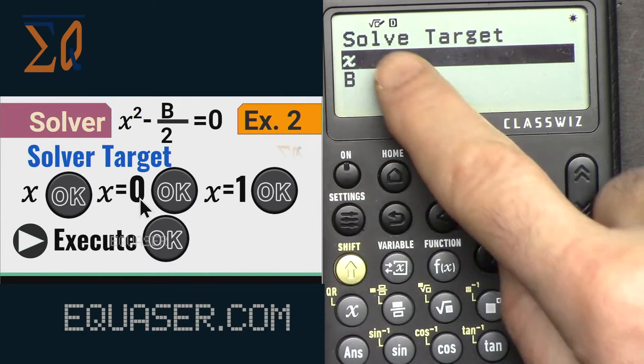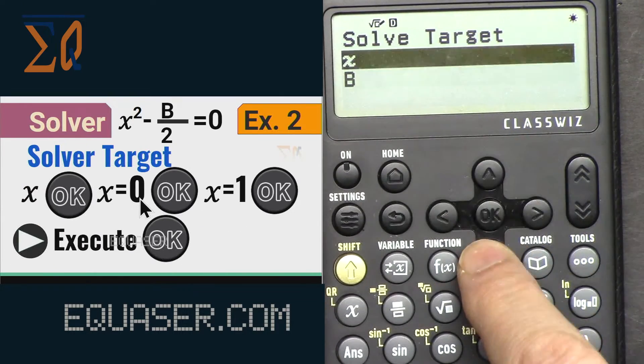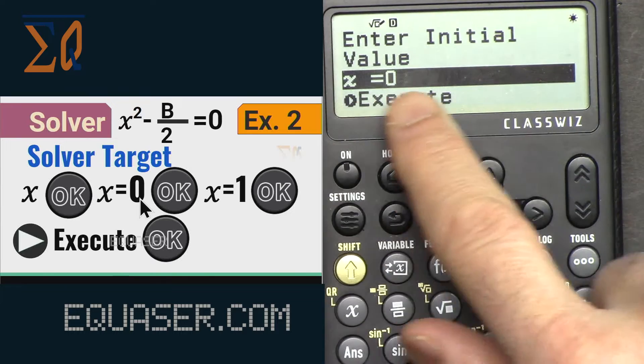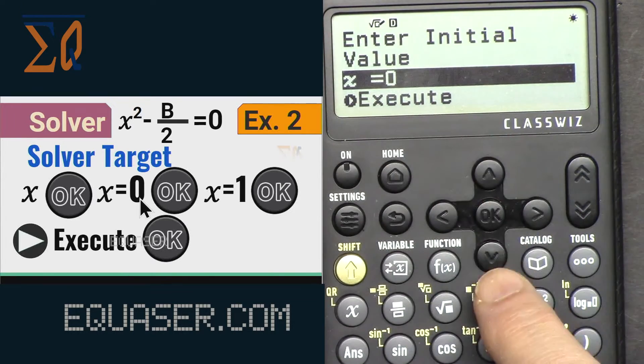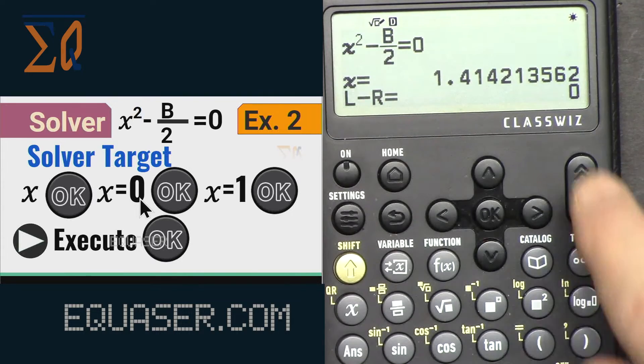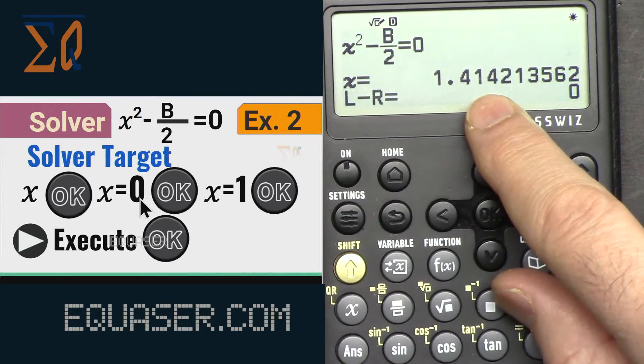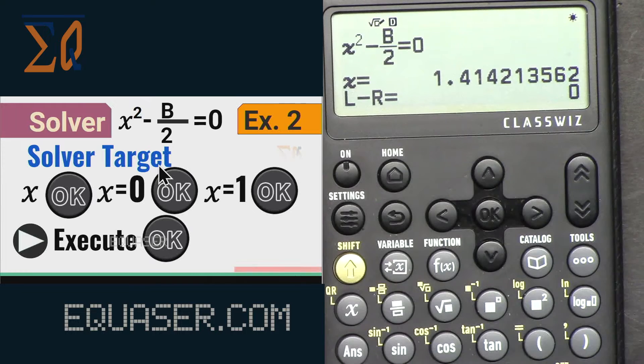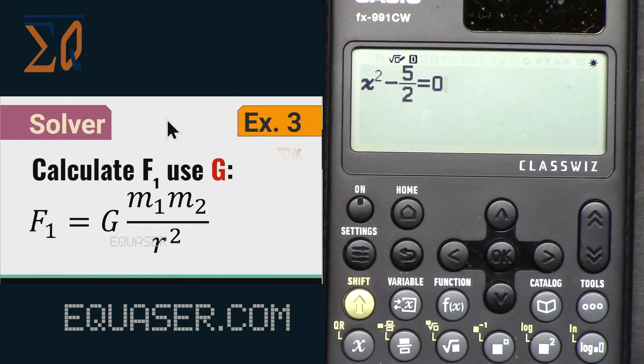And it will ask you for which is the target, x, and x initial value 1, and then execute. And that's the answer that we got for this question. Now we can use also different method.